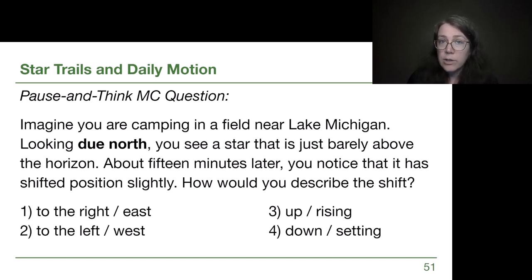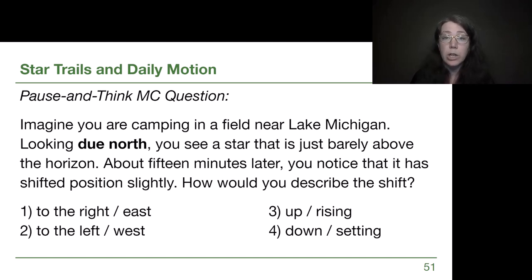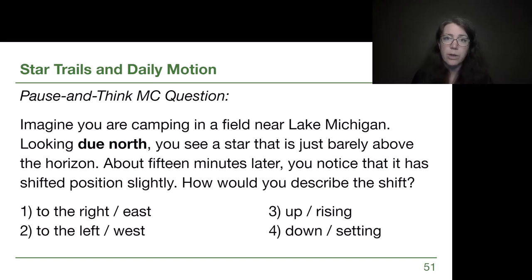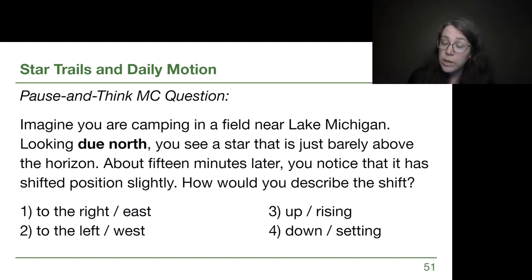With that understanding, let's check our critical thinking skills. Imagine you're camping in a field near Lake Michigan. You look due north and see a star just barely above the horizon. We want to think — given that Polaris is about halfway up due north, the sun rises in the east, and sets in the west — what direction would this star be moving? One of the things I want us to recognize is that if we can confidently rule out some options, that's a really useful step in critical thinking.